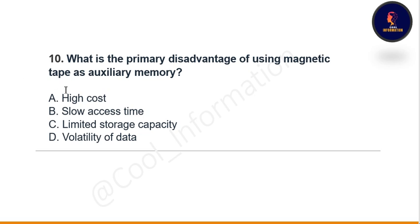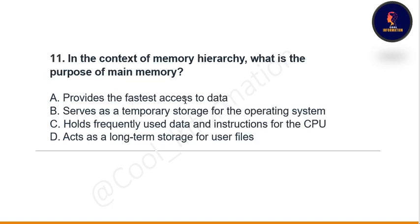Next question: what is the primary disadvantage of using magnetic tape as auxiliary memory? Options are high cost, slow access time, limited storage capacity, or volatility of data. The correct option is B — slow access time.